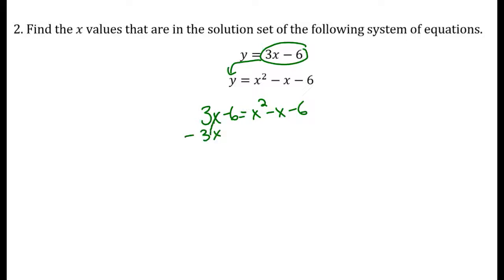When I set it equal to 0 and add 6 to both sides, I get 0 equals x squared minus 4x, and that adds to 0. This is not the difference of perfect squares. This is just a GCF problem. So I get x equals 0 and x equals 4.